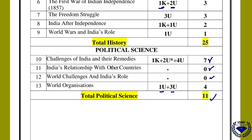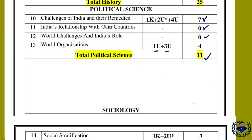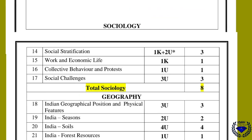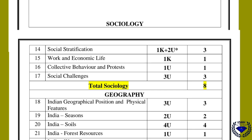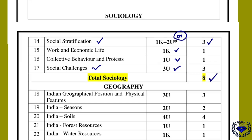From sociology, there are four chapters. Social stratification gives one objective and a two-mark question, with the two-mark question having an 'or' option — total three marks. Work and economic life has one objective question. Collective behavior and protection has a one-mark one-liner direct answer. Social challenges carries a three-mark question. Total eight marks can be expected from sociology.